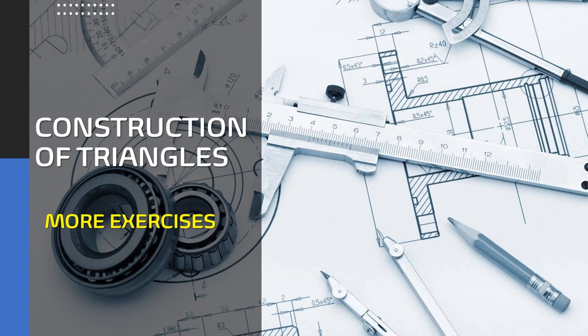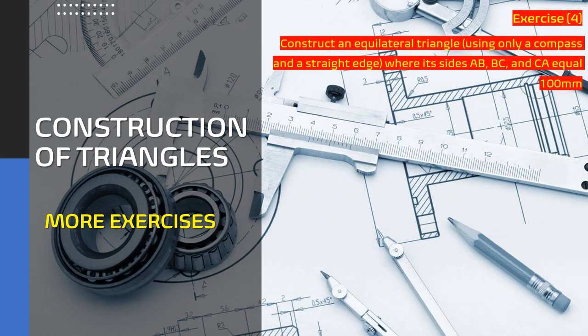Hi folks, we continue with our exercises regarding the construction of triangles. Hopefully by going through these four exercises, we'll reinforce everything we've done today. Exercise four challenges us to construct an equilateral triangle using only a pair of compasses and a straight edge. The geometry states that sides AB, BC, and CA each equal 100 millimeters.